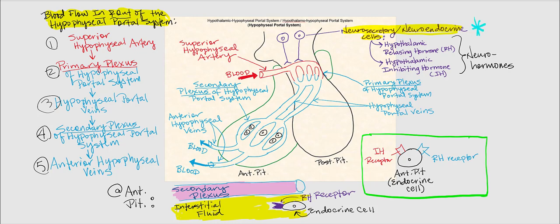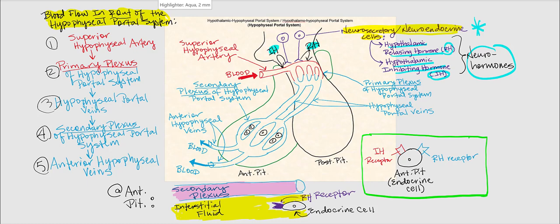Now let's look at the neurosecretory or neuroendocrine cells found in the hypothalamus. They are neurons, with the exception that they do not secrete neurotransmitters — instead, they secrete neurohormones. We have two regulatory hypothalamic hormones: the hypothalamic-releasing hormone, or RH, and the hypothalamic-inhibiting hormone, or IH. These are regulatory hormones that control the secretion of the endocrine cells found in the anterior pituitary. So these neurosecretory cells secrete RH and IH, which end up in blood — which is why they are hormones, not neurotransmitters.